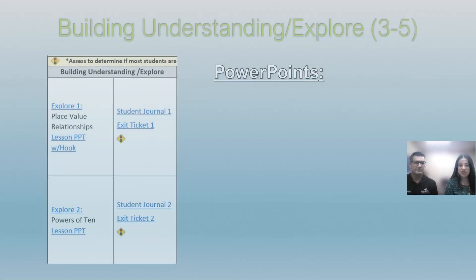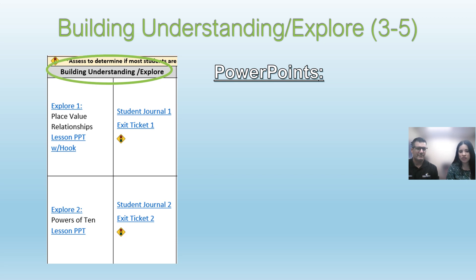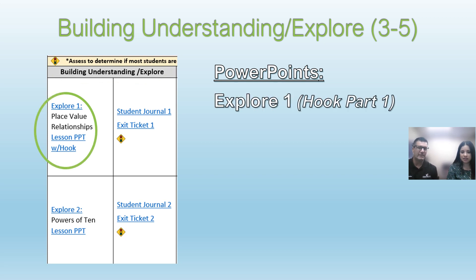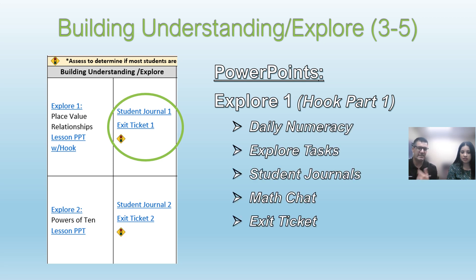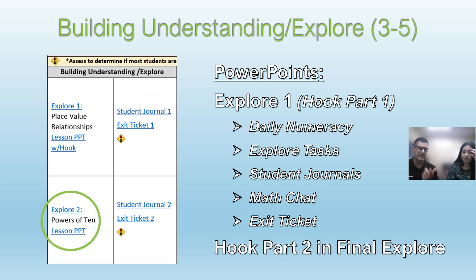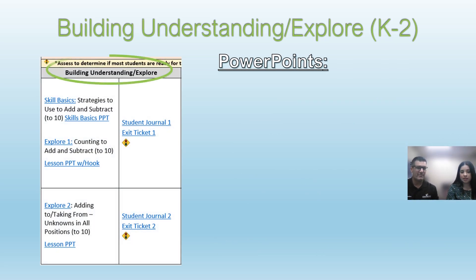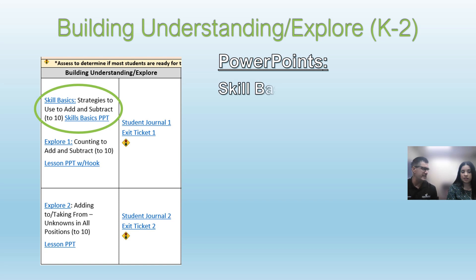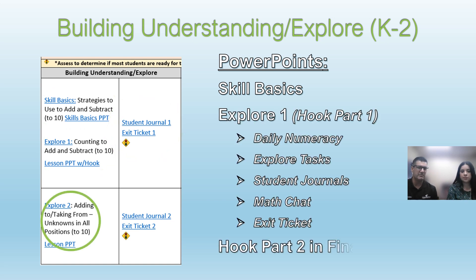That looks familiar — I remember that in the structure. That would be part of our Structure A, where our Explorers are going to fall. We see we've got PowerPoints for each of those Explorers. Explorer 1 is always going to have the Hook, and we see the other aspects that will all be embedded into every Explorer PowerPoint. You'll have a PowerPoint for every Explorer. Hook Part 2 is always going to be in that last final Explorer for the unit. And remember, even in K–2, we saw those Skill Basics — you're going to have a PowerPoint for those, sometimes before an Explorer, sometimes after. It's going to look different in every unit, and we see those same aspects of the Explorers in primary as well.